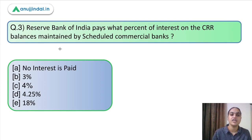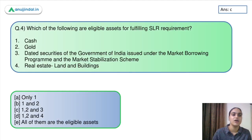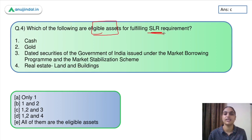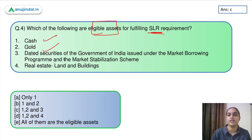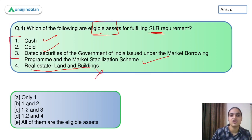Question three: Reserve Bank of India pays what percent of interest on CRR balances maintained by scheduled commercial banks? No interest is paid on CRR balances, so the answer is option A. Question four: Which of the following are eligible assets for fulfilling SLR requirements? Gold, cash, and dated securities under the market borrowing or market stabilization scheme are liquid assets. Real estate, land, and buildings are not liquid assets and are not included. Only these three — cash, gold, and approved securities — are eligible assets. Answer is option C.